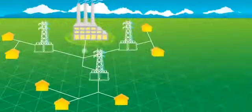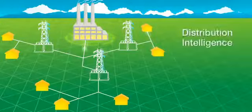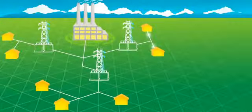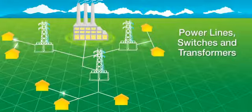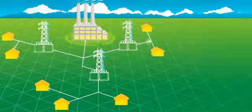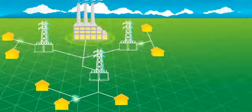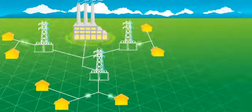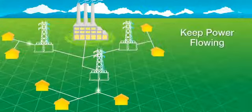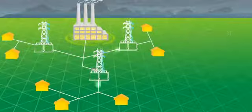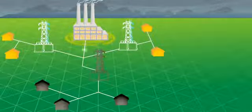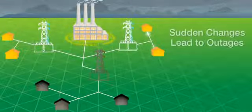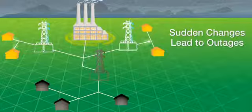The distribution system routes power from the utility to residential and commercial customers through power lines, switches and transformers. Utilities typically rely on complex power distribution schemes and manual switching to keep power flowing to their customers. Any break in this system caused by storms, bad weather or sudden changes in electricity demand can lead to outages.